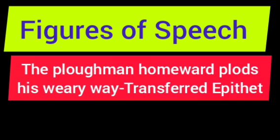Next is transferred epithet. The example: 'The plowman homeward plods his weary way.' Here 'weary' has been transferred from the plowman to the way — it is transferred from a person to an object. When an adjective is transferred from one word to another, that is transferred epithet. So these are the examples of figures of speech. Thank you.